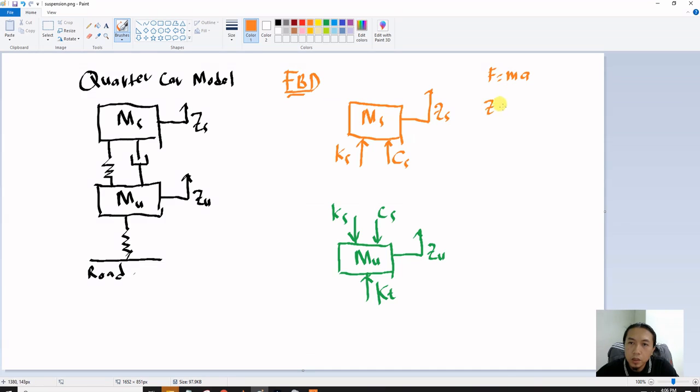So z is a displacement. Z dot is a velocity, and then z double dot is acceleration.